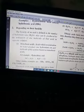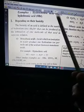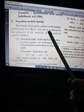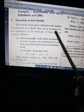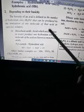We need to understand the term basicity. The basicity of an acid is defined as the number of hydronium ions, or H+ ions, that can be produced by the ionization of one molecule of that acid in aqueous solution.